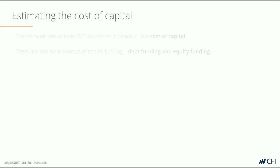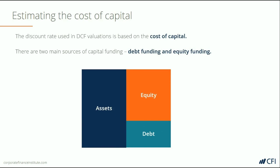Weighted Average Cost of Capital. In this session, we're going to estimate the cost of capital. It consists of equity funding cost and debt funding cost. We then weight those two based on the capital structure of the company. The combined cost is the weighted average cost of capital, which is the cost of funding the assets of the company.